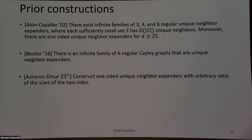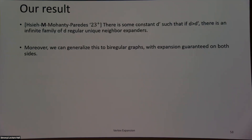Similar to the zigzag product, Asherov and Dinur showed that even if the ratio of L to R can be anything, they can still construct a one-sided unique neighbor expander. What we showed is that for constant D, if D is sufficiently large, there's an infinite family of D-regular unique neighbor expanders. We also generalized this to biregular graphs because of some computer science applications.